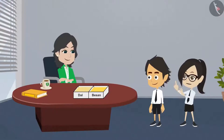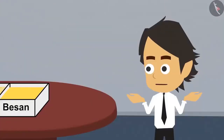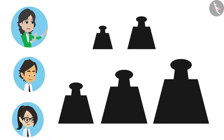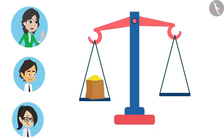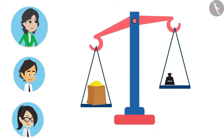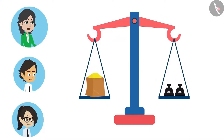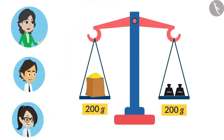Just like we use litre to measure liquid, we use gram to measure solid objects. Objects like dal which are not easy to count, and objects like besan that cannot be counted, are measured in grams. This means after measuring besan in grams, we can divide it into two halves. Yes, if you have 500 gram besan, then you can divide it into 250 grams each. But madam, how do we measure objects in grams? We use a scale and weights to measure in grams. Weights are iron pieces of different grams made to accurate measure — they come in 50 grams, 100 grams, 250 grams, 500 grams, 1000 grams, etc.